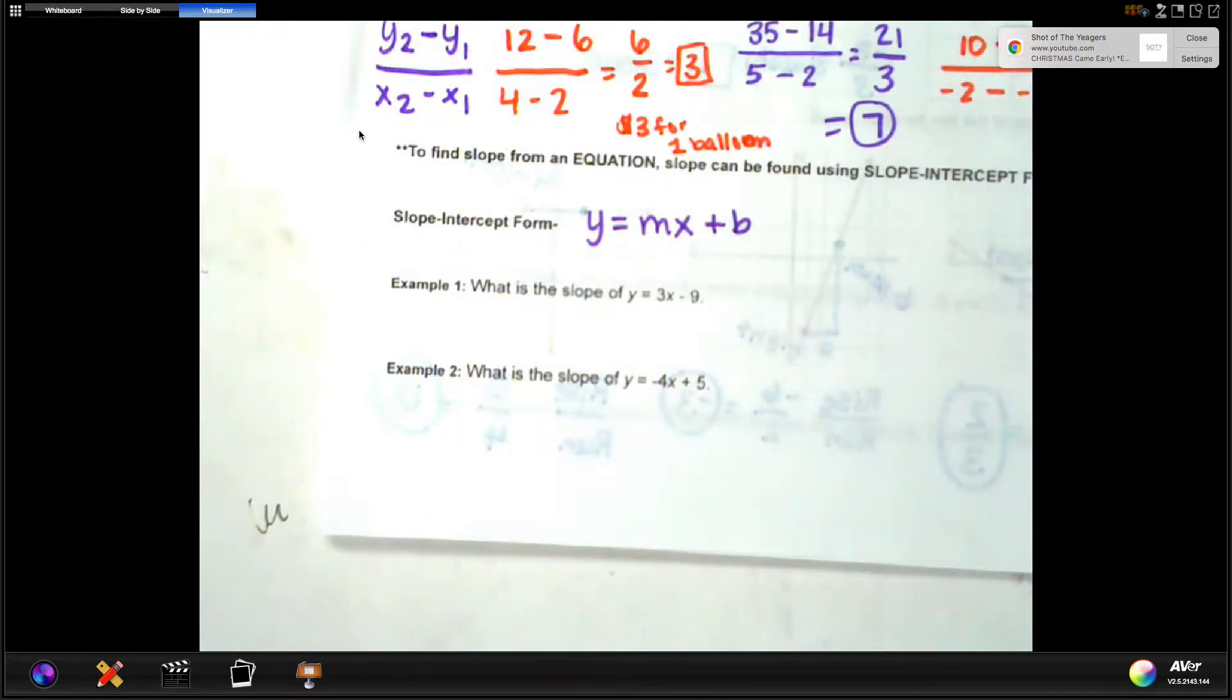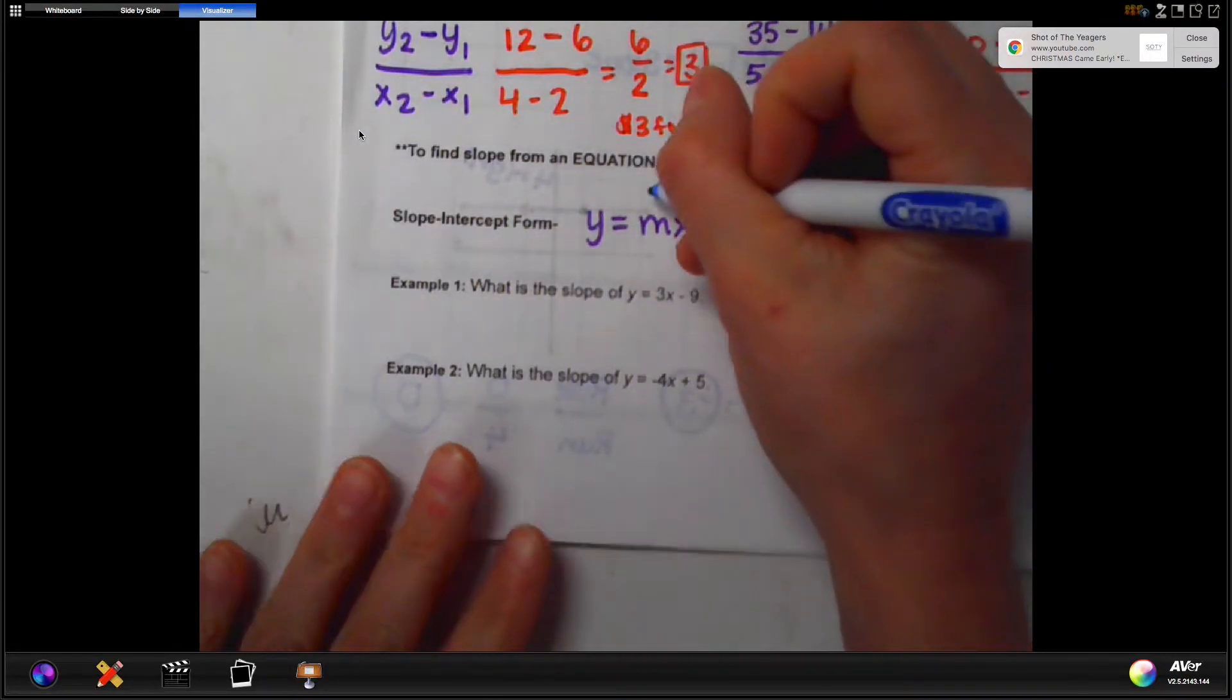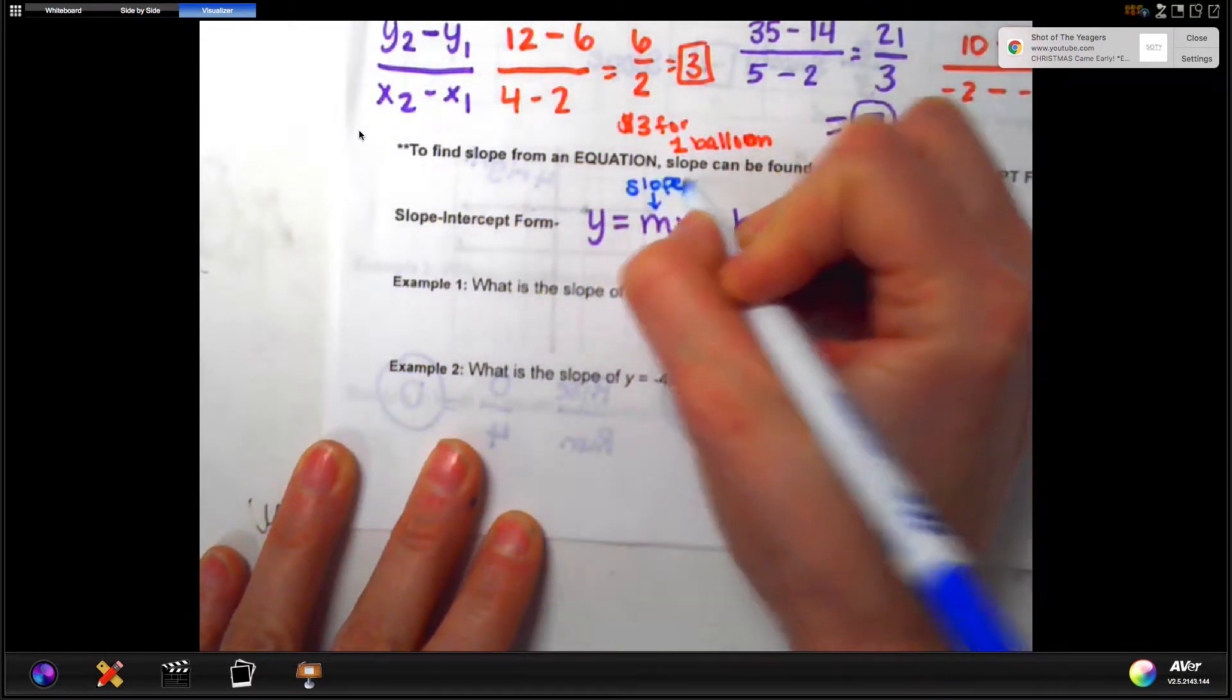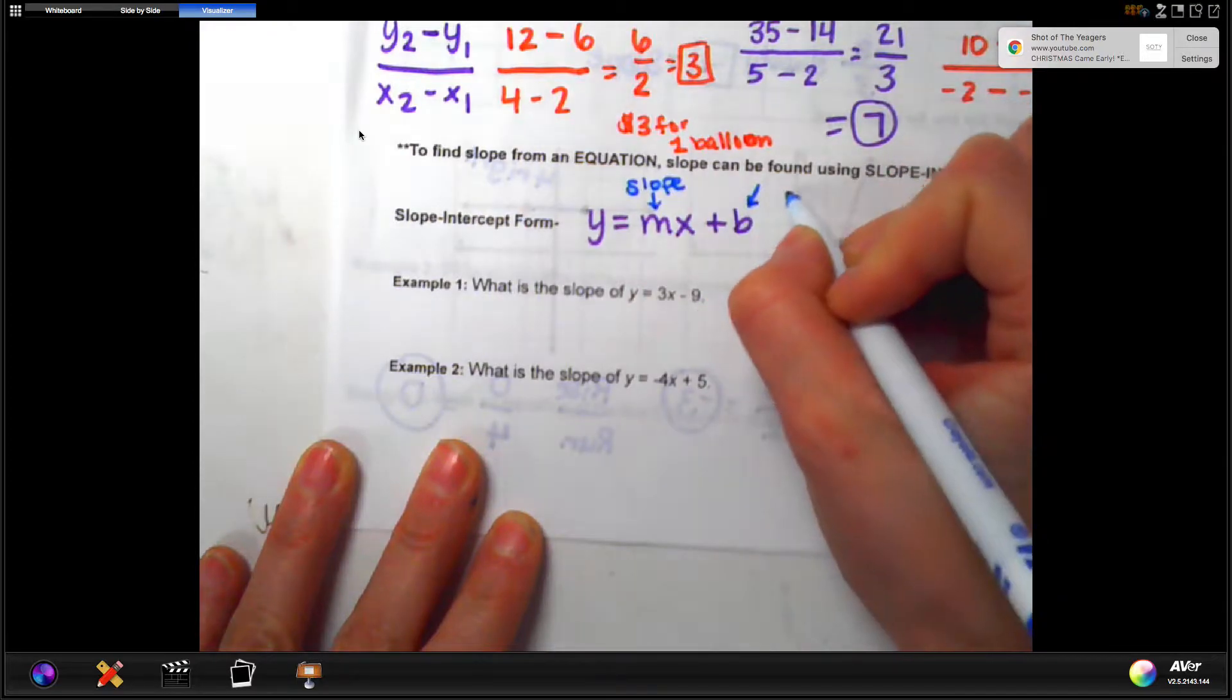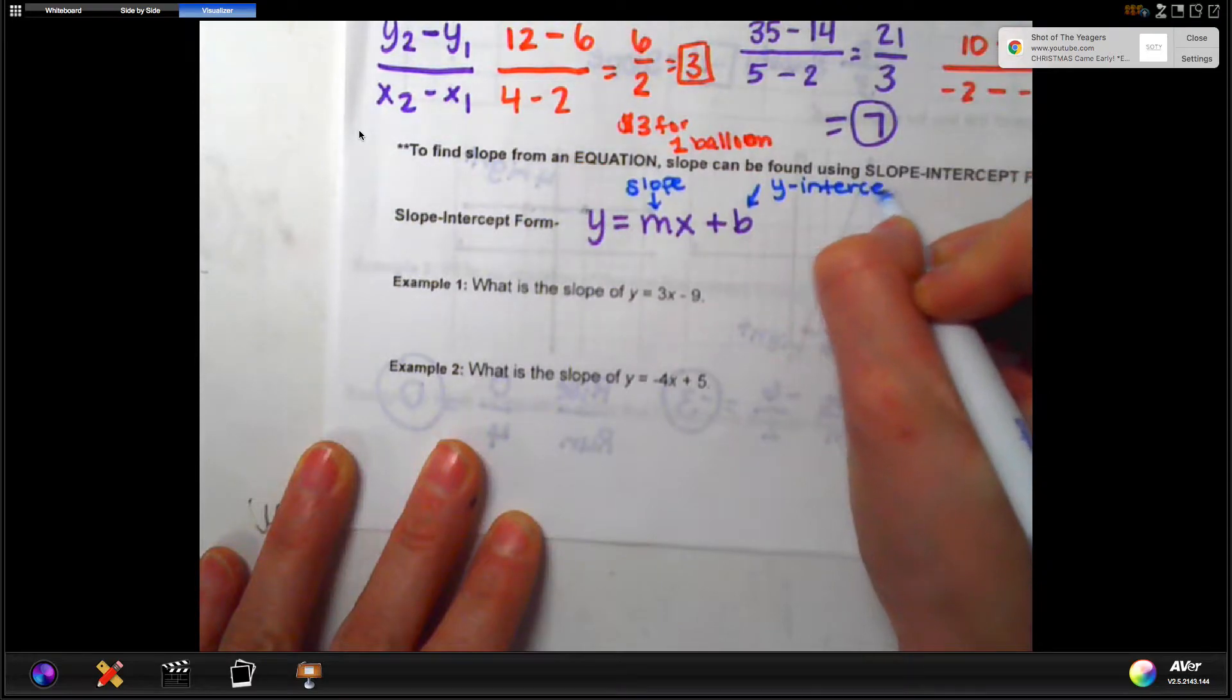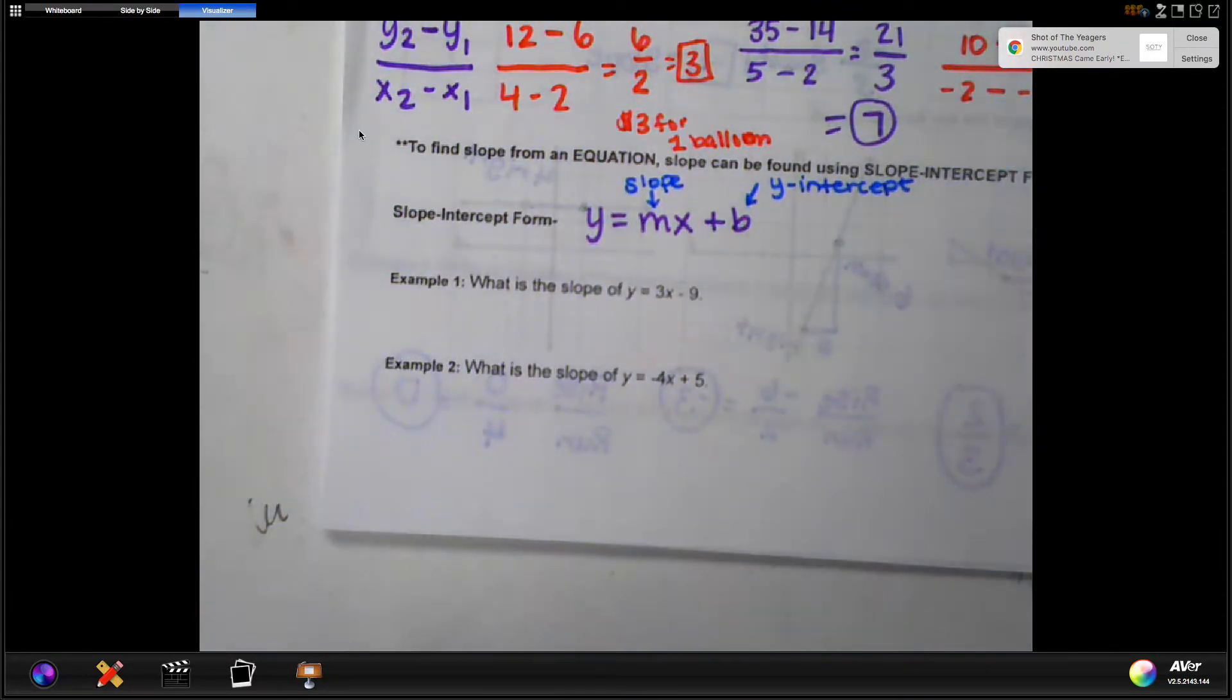Now, realize that m and b we're going to replace with numbers as we go, and those numbers are going to represent the slope. So m, whatever number is next to our x, is going to be the slope. And b, the extra number, is going to be what we call the y-intercept. The y and the x, those will be changing values of ordered pairs as we go through.